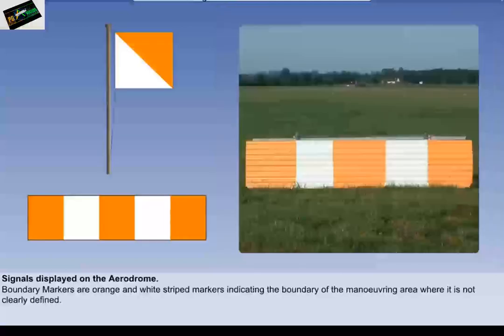At intervals along the boundary of an aerodrome, orange and white stripe markers are used to delineate the boundary where it is insufficiently conspicuous.